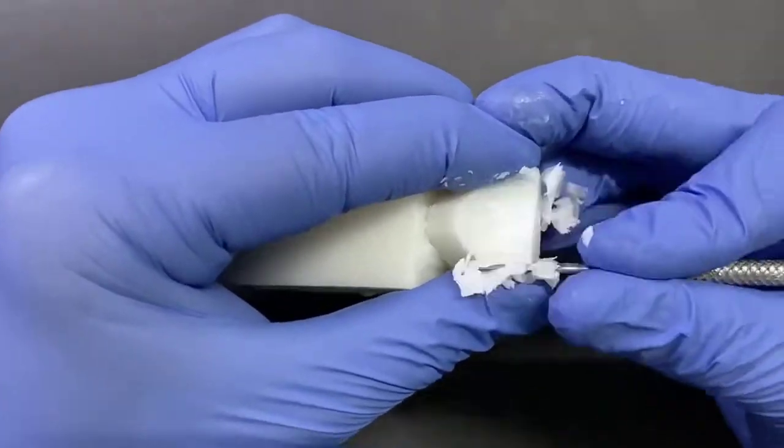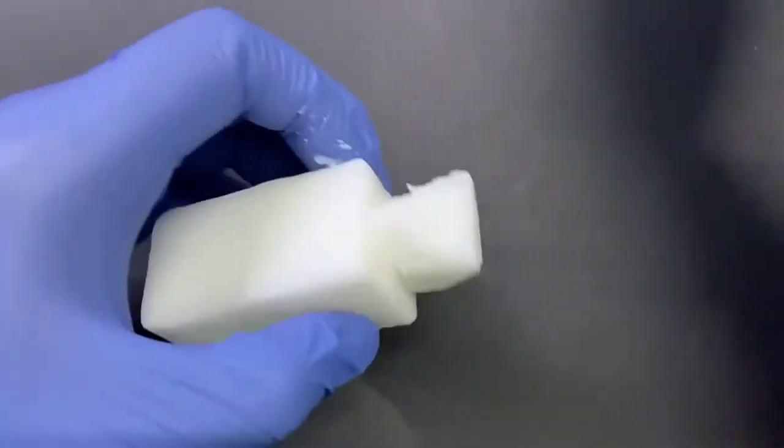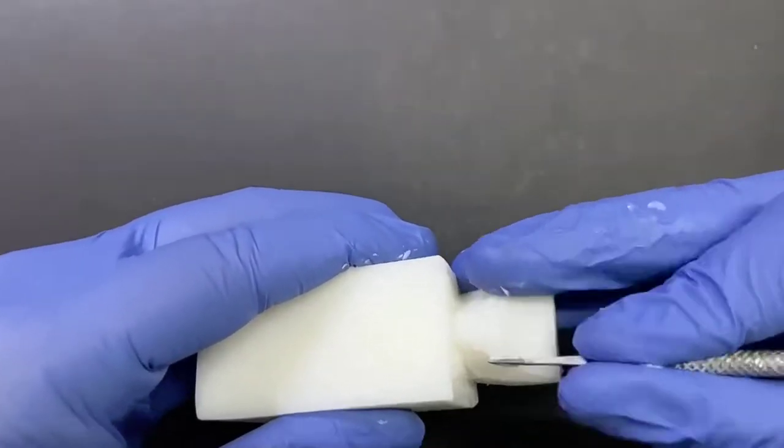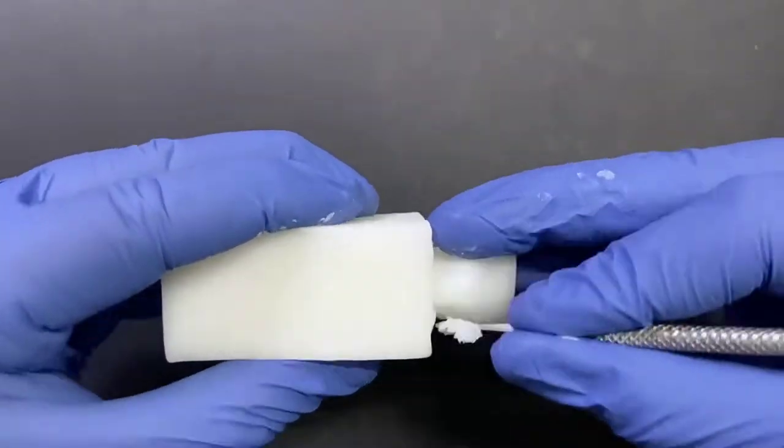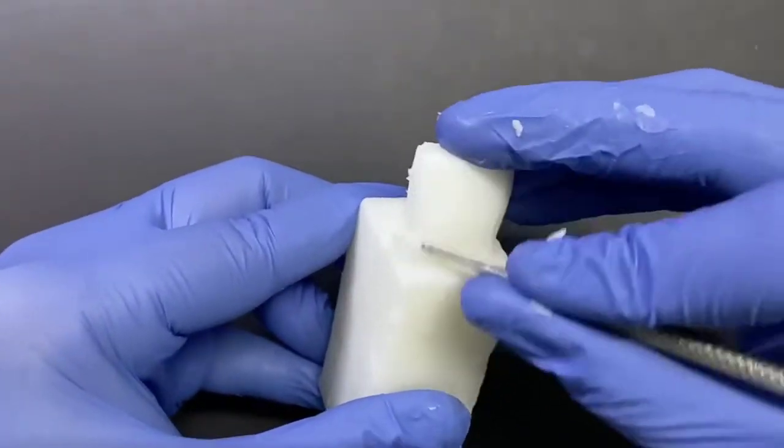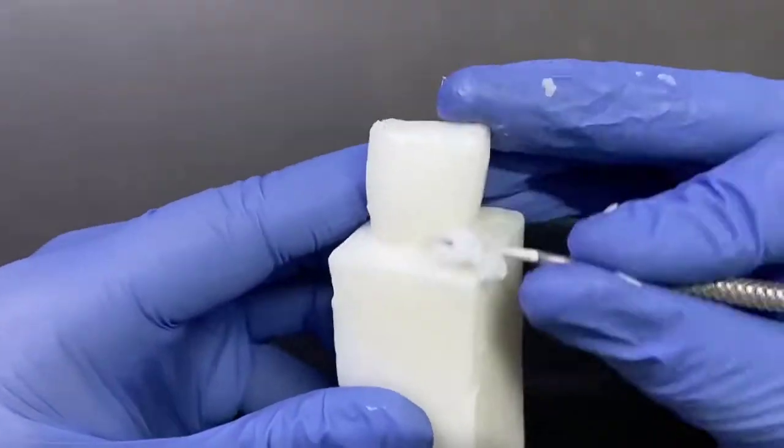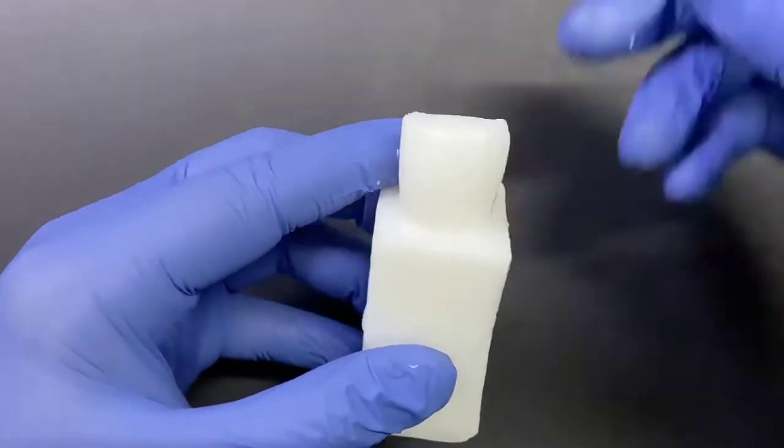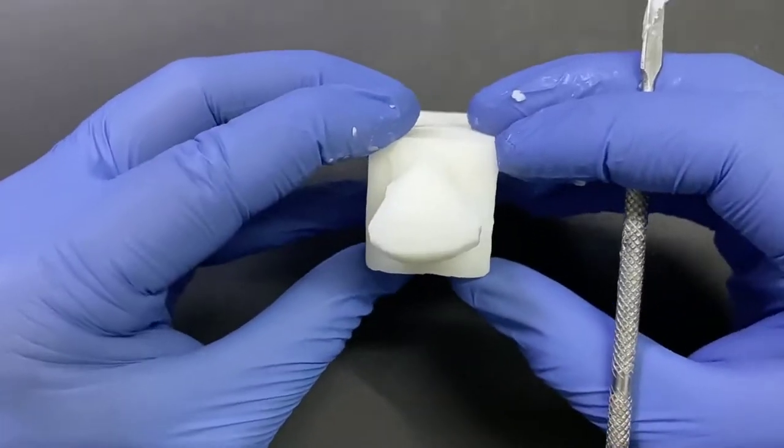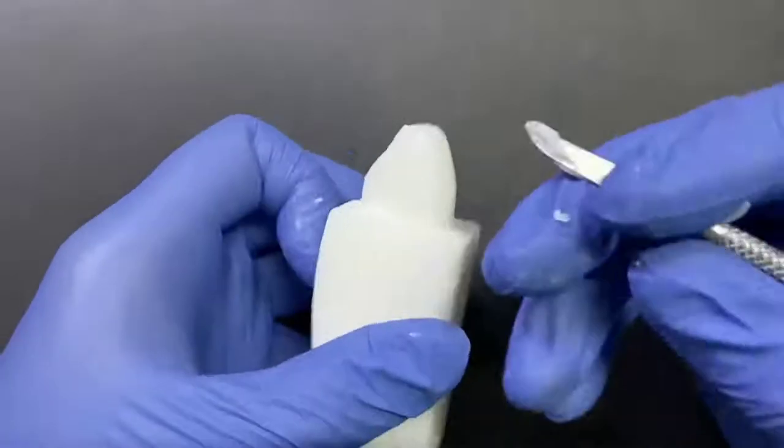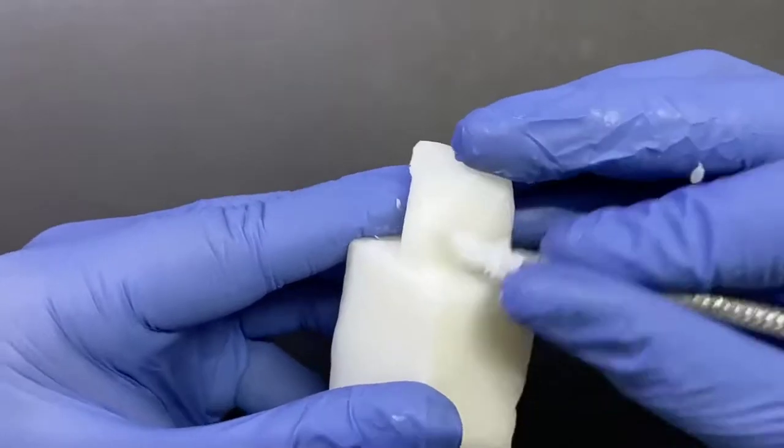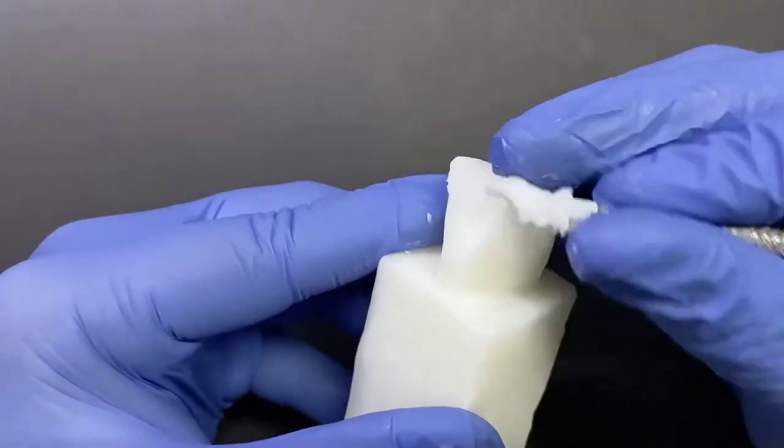Now we are reducing the labial-lingual width incisally from the lingual side. We would be diminishing the sharp cingulum and making it slightly rounded, rounding off the sharp line angles with the help of a carver.